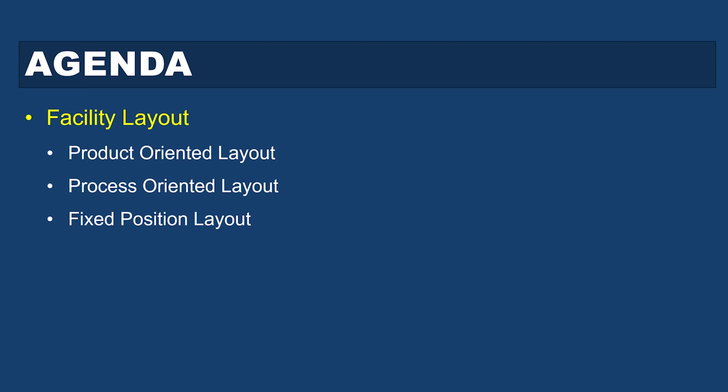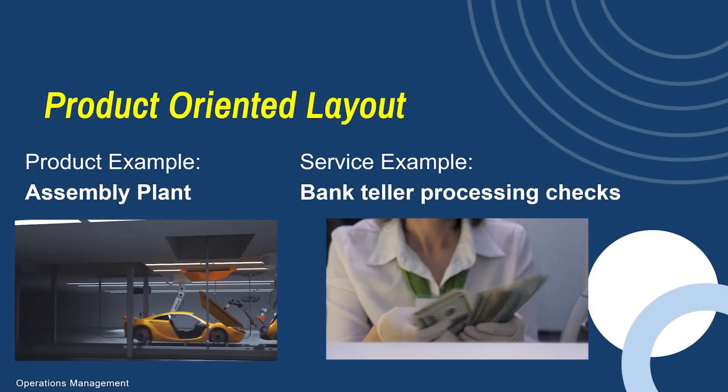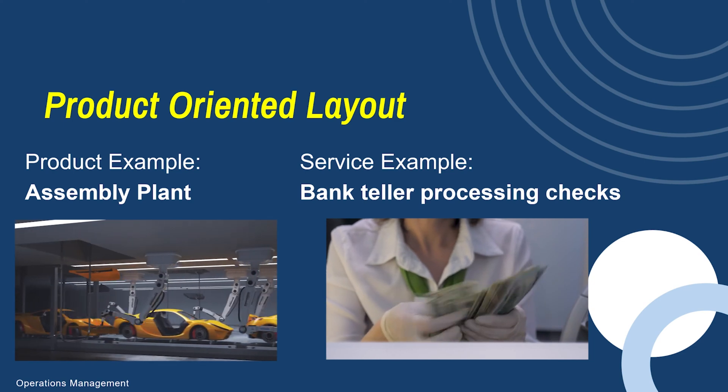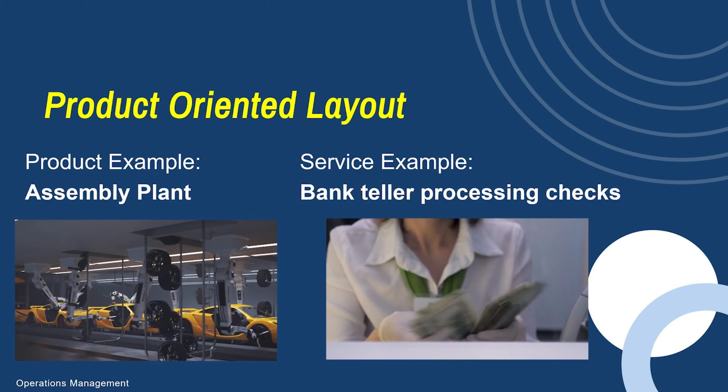A product-oriented layout is a layout in which you're producing the same or similar products in high volume or high demand. This is also called a sequential layout. There aren't a lot of product variations, which is why it's called product or sequential — you're producing almost the exact same thing over and over again, so the layout fits the dominant flow of that particular product, or you're producing in a consistent sequence.